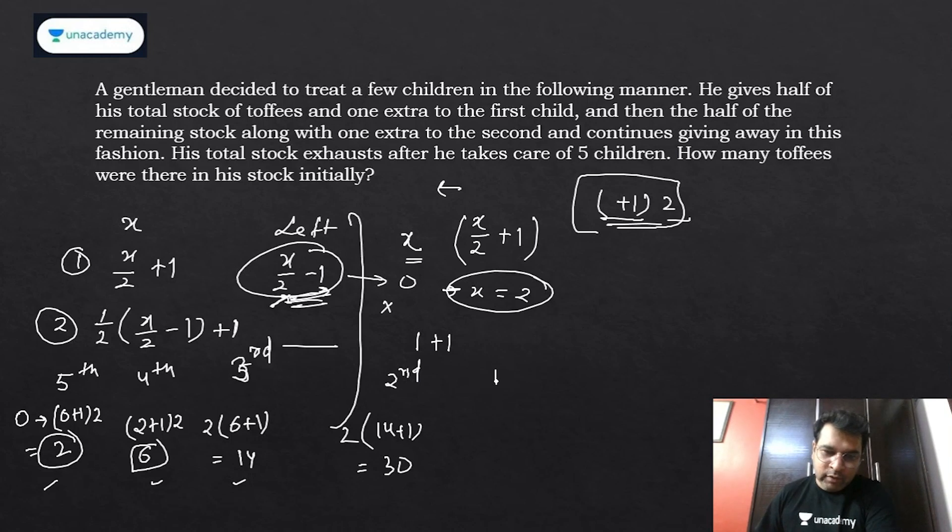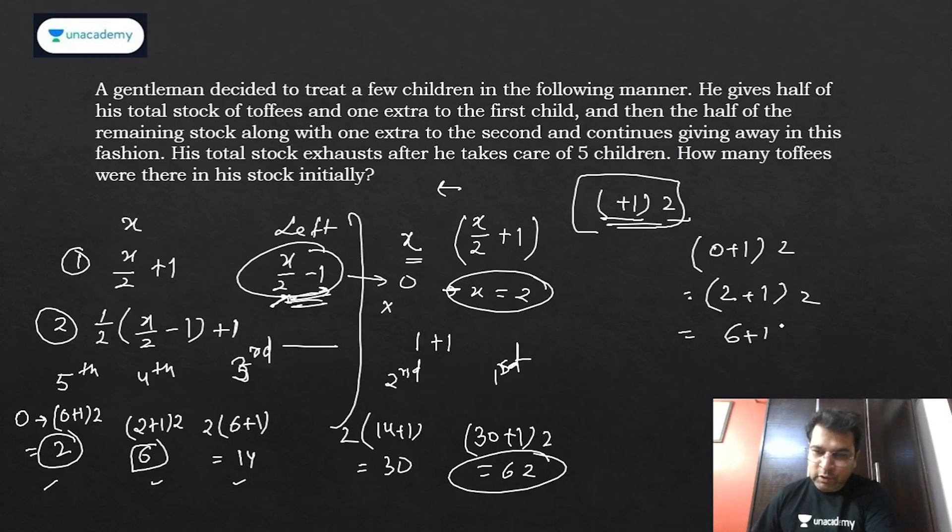Second child will be 14 plus one and double of that is 30. First child will be 30 plus one and double is 62 - that's your answer. I just need to start with zero in the reverse manner, adding one and double: zero plus one is two, plus one is six, plus one is fourteen, plus one is thirty, plus one is sixty-two. I need to do this five times, so obviously the answer is 62.